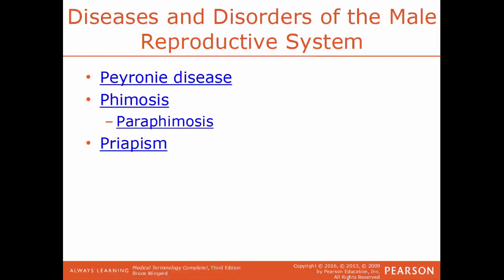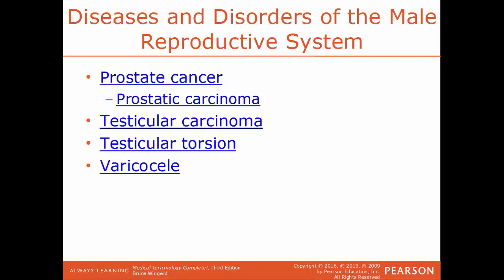Priapism is a prolonged and painful erection. Prostate cancer is a cancer of the prostate gland, also known as prostatic carcinoma. Testicular carcinoma is cancer within the testicles. Testicular torsion is the twisting of the spermatic cord, the structure that supports the testes within the scrotum — as it twists, the blood supply is cut off from the testicles. Varicocele is a collection of varicose veins found in the spermatic cord — an enlargement of the veins within the scrotum.